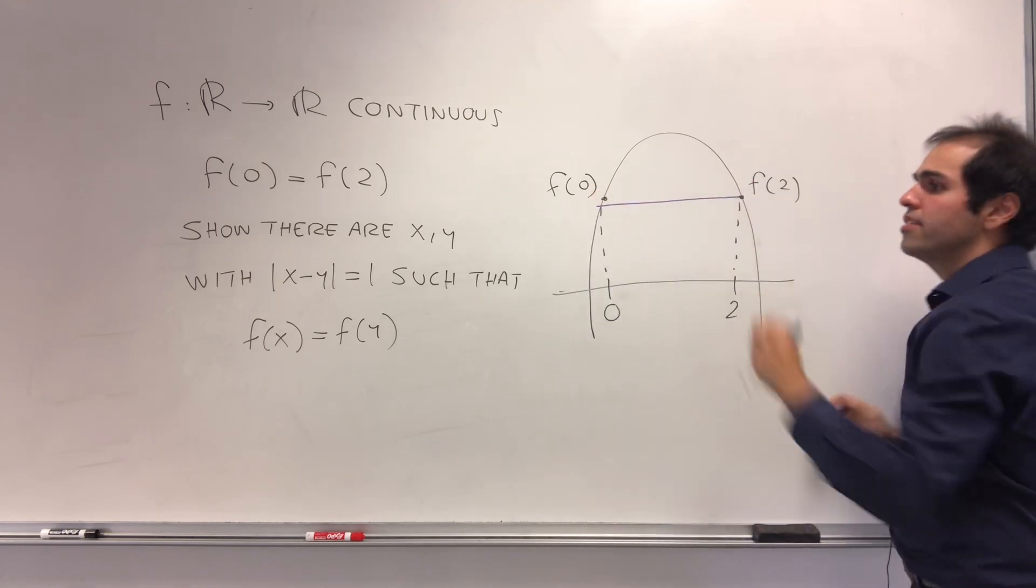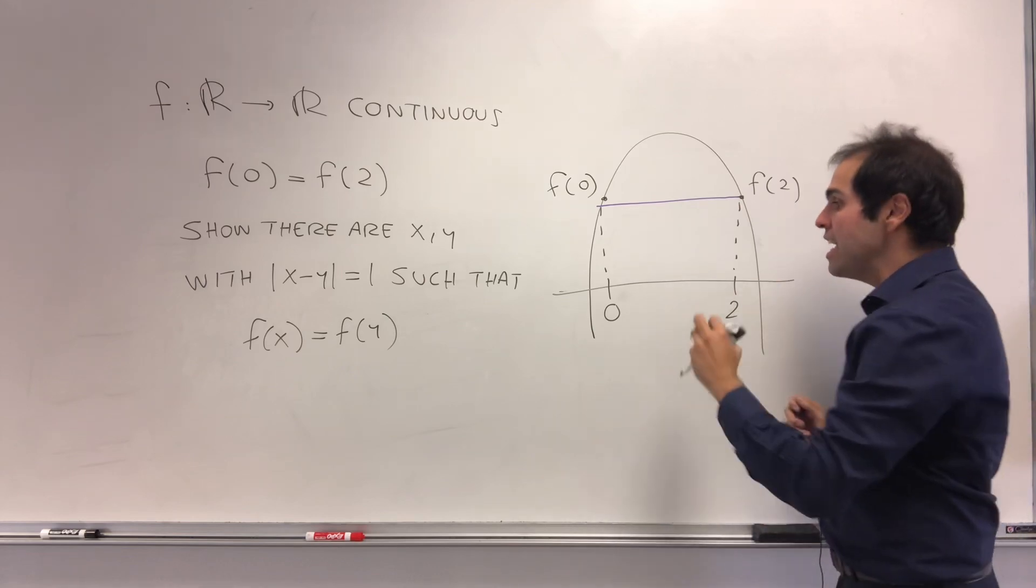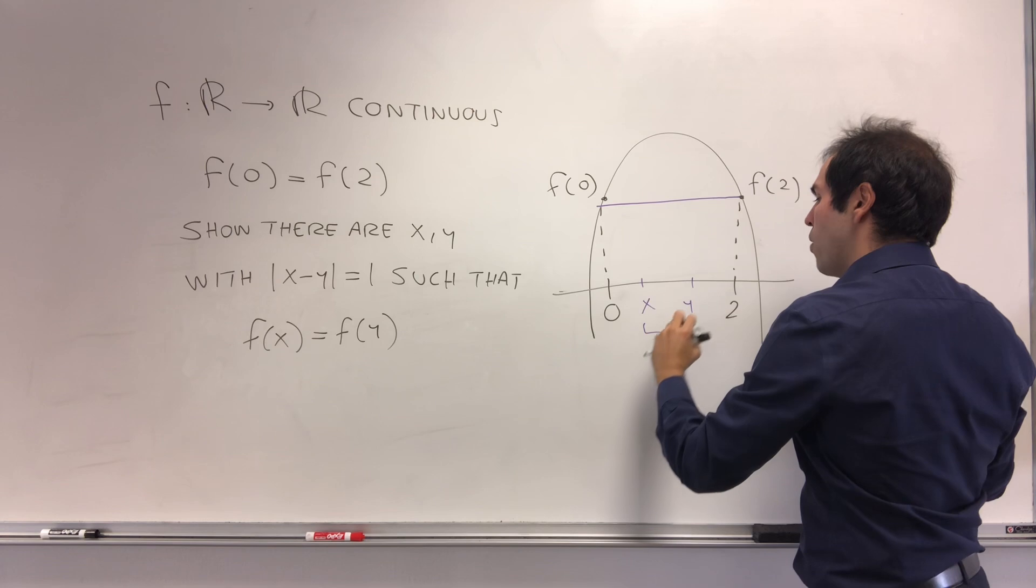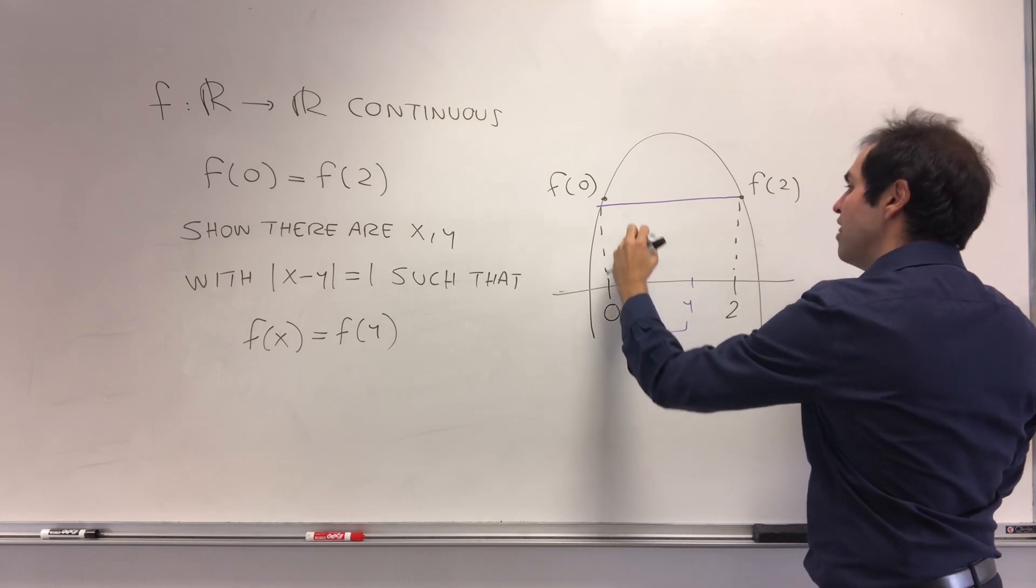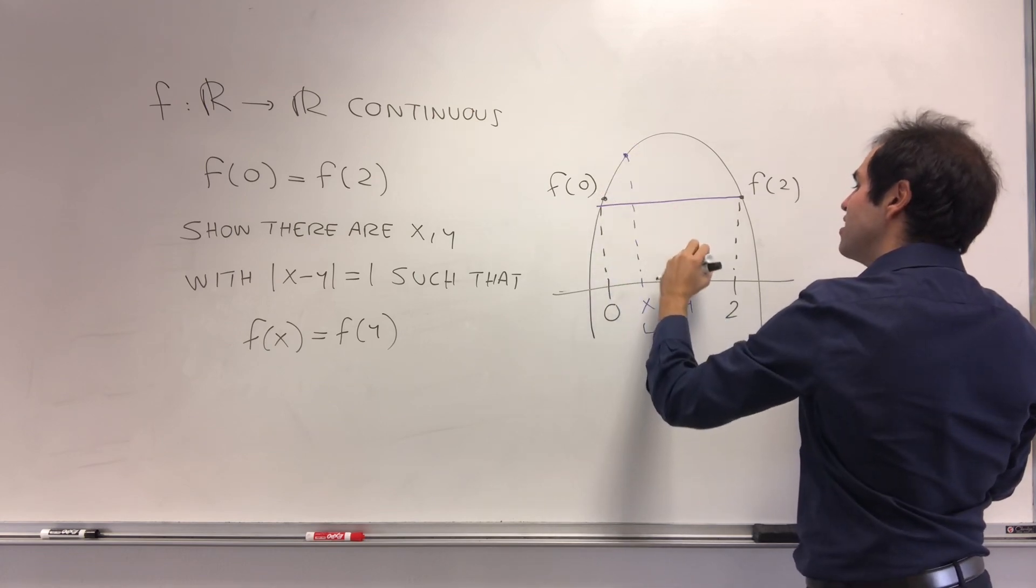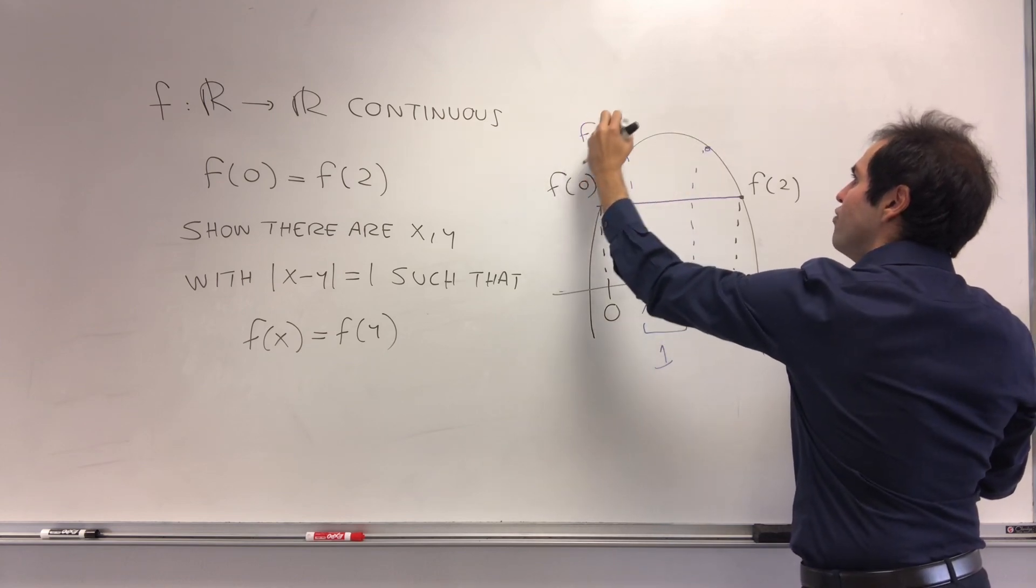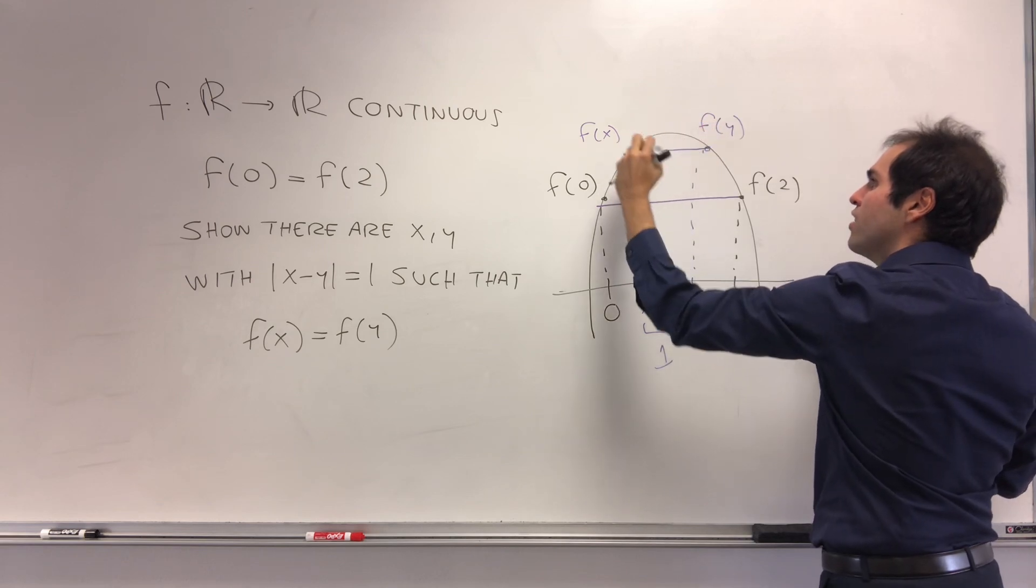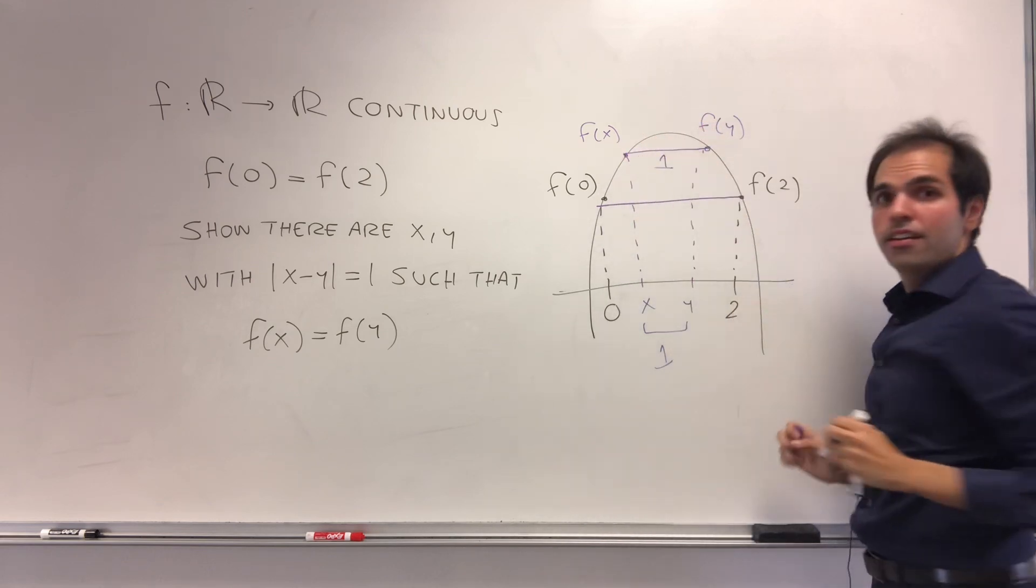What I want to show is something even better: you can find x and y that are one apart such that f(x) = f(y). This is f(x) and this is f(y). In other words, you can cut out a segment of length 1 from this.